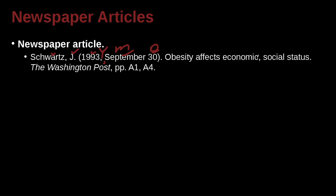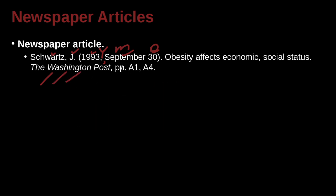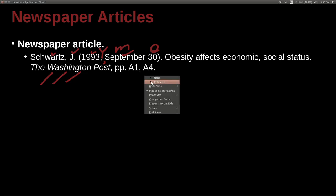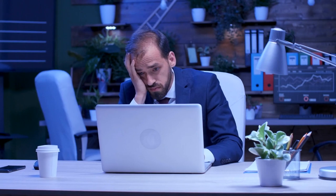'Obesity Affects Economic Social Status' — that is the name of the article inside the newspaper. The newspaper's name is the Washington Post. You can see it's in italic. And 'pp' means that this is a page range; they don't use regular page numbers — they have this A1, A4 section of the newspaper. Each case is a little bit different in the examples I've given you. You need to go to the APA guidelines to see exactly how it fits what you're quoting.